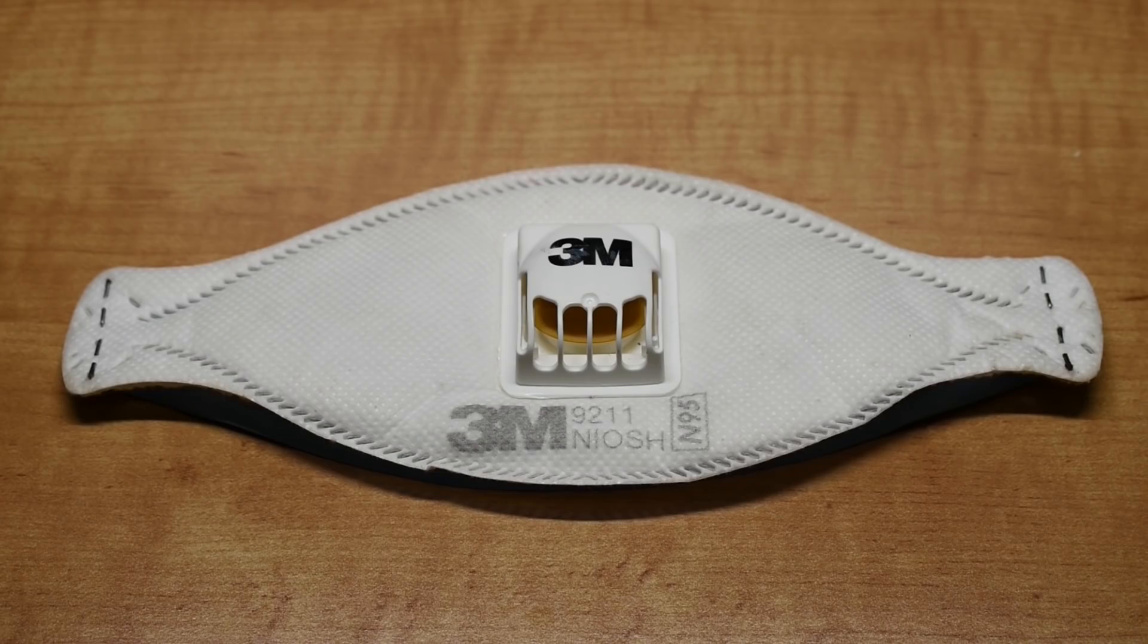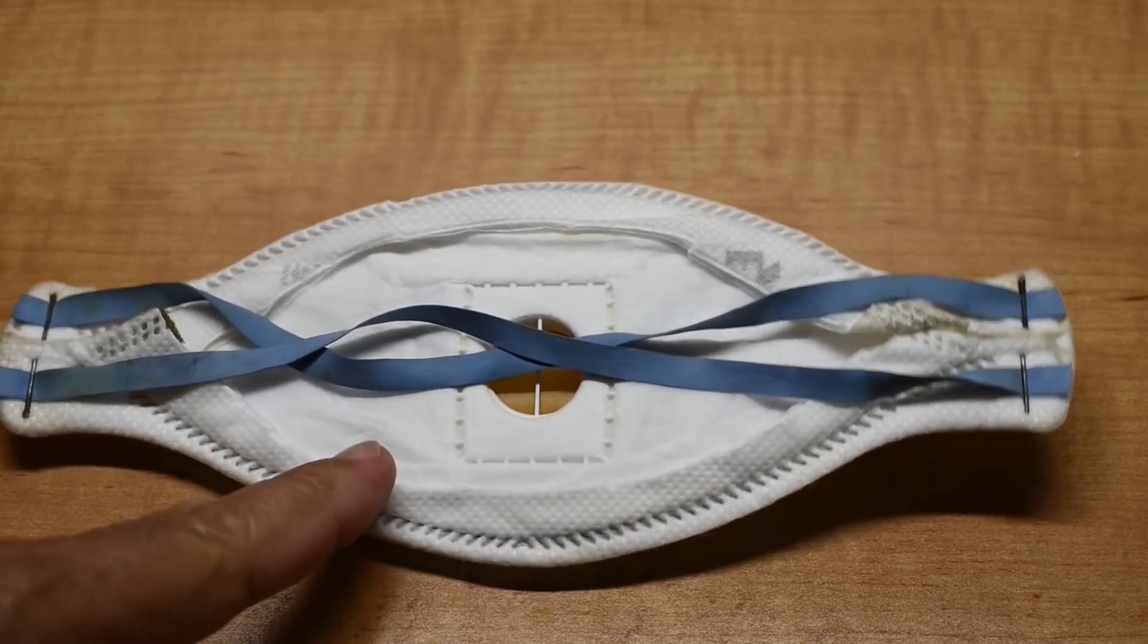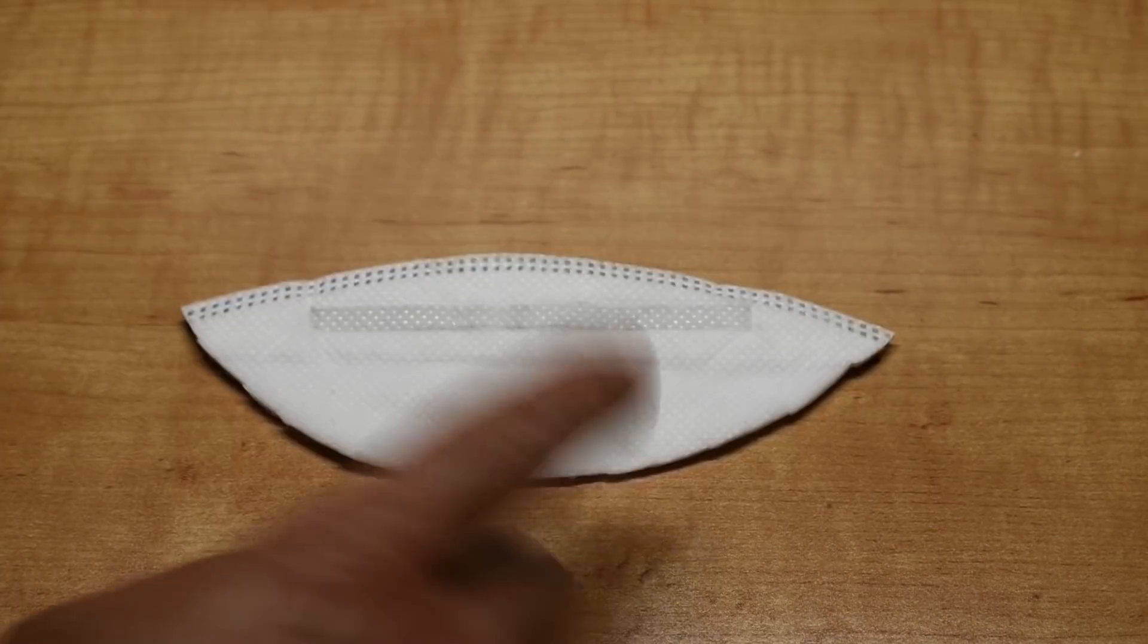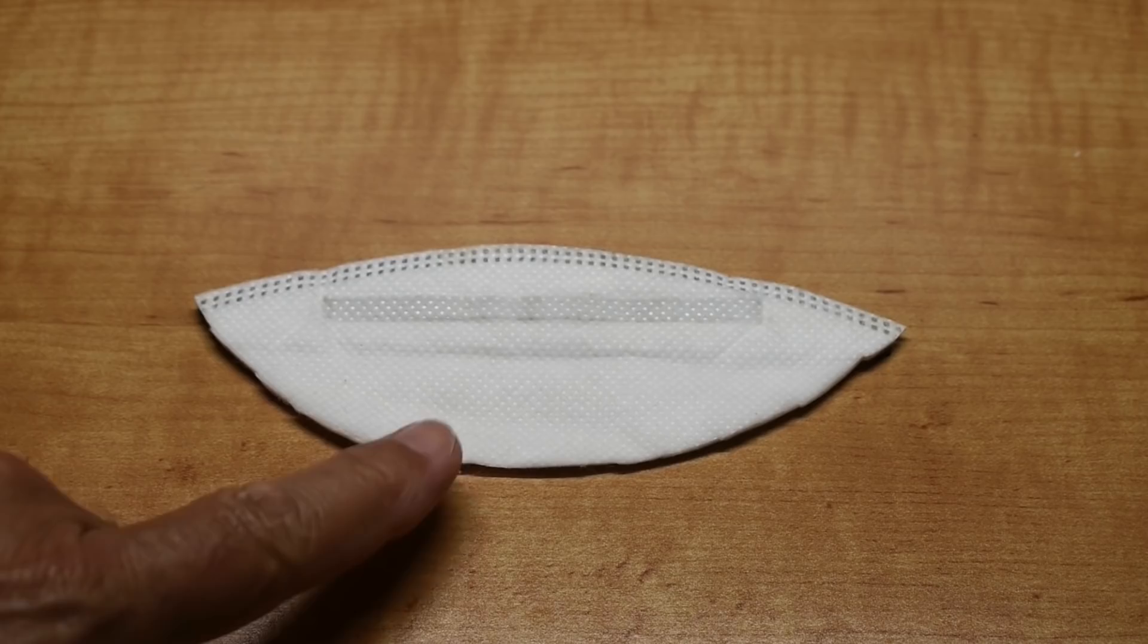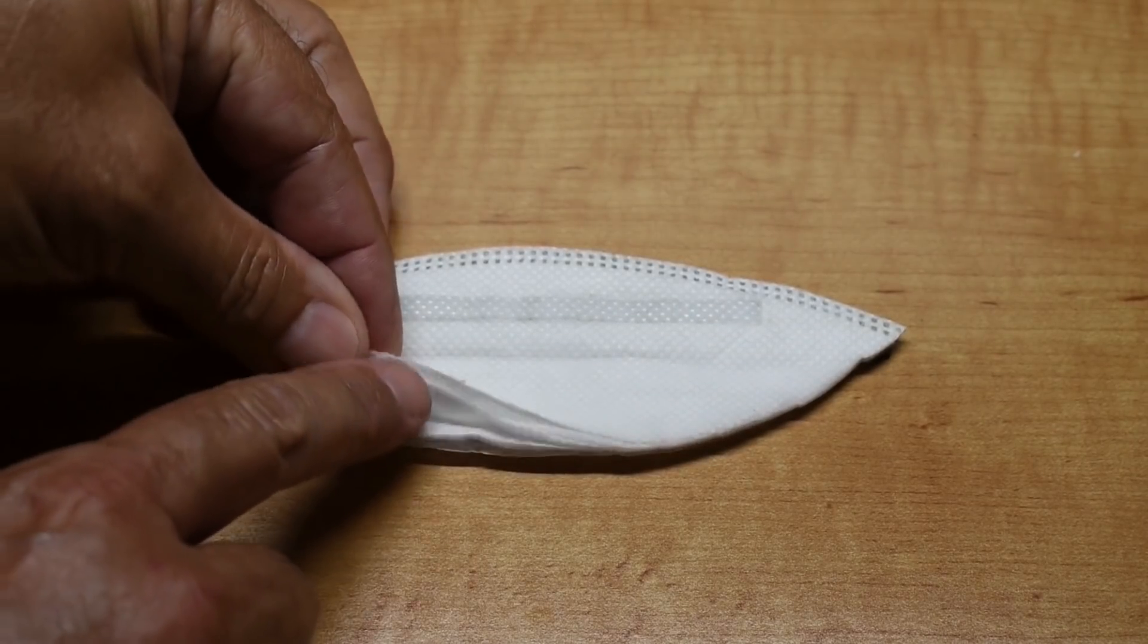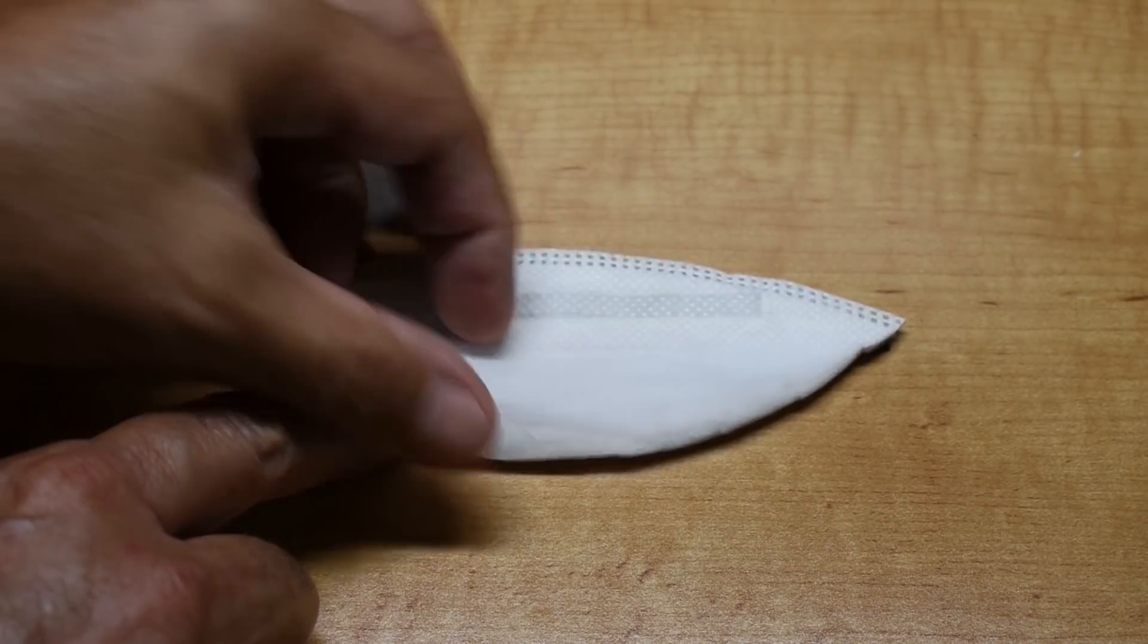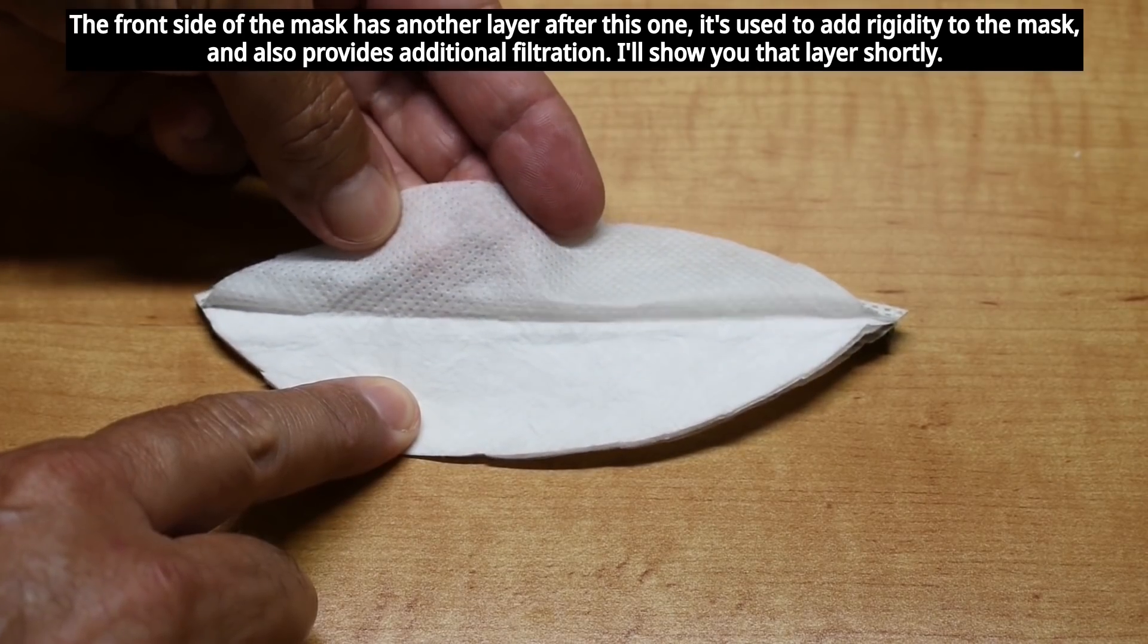In order to look at this under the microscope, on the back side I cut away all the fabric, and it's right over here. This right here is the outer layer. You can see through it a little bit.